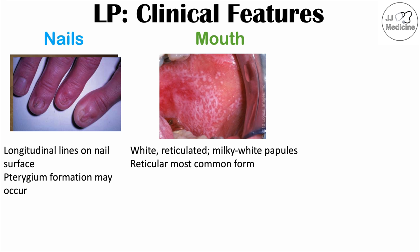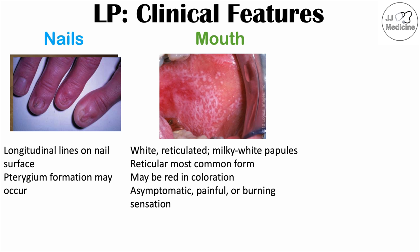Oral lichen planus lesions may be red in coloration. They can be asymptomatic or painful and burning. These are among the more common lesions found in patients, occurring in roughly 50 to 60% of patients with lichen planus. In some cases, they may be the only finding.